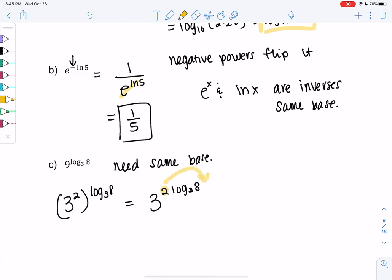So I'm going to use that power property and bring that in. So we get 3 to the log base 3 of 8 squared. So now the 3 and the log base 3 cancel out because the bases match. And we're just left with 8 squared or 64.